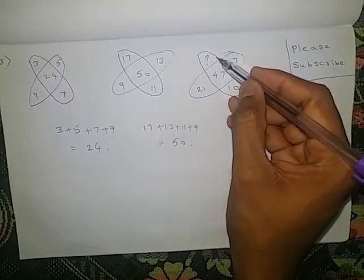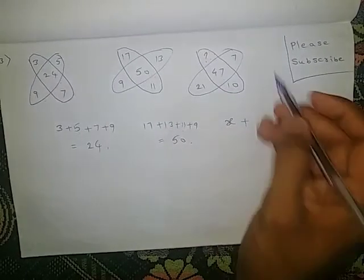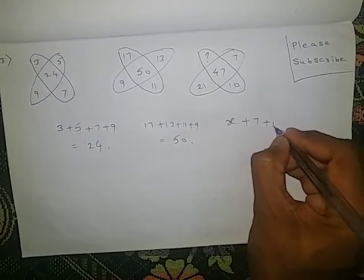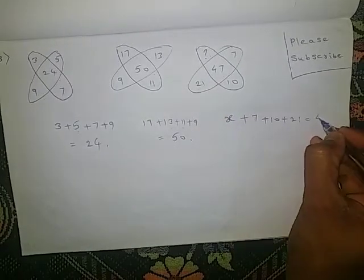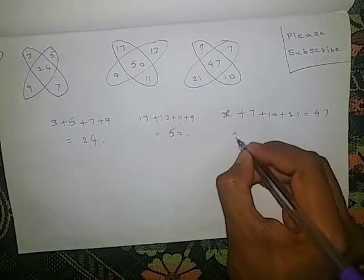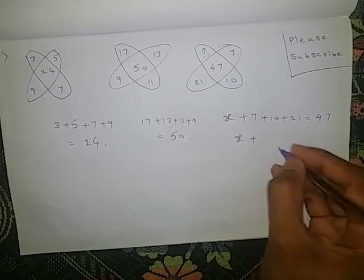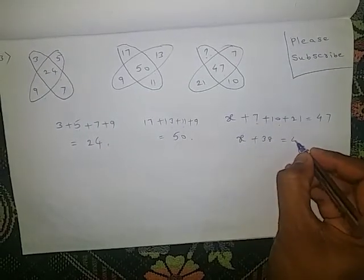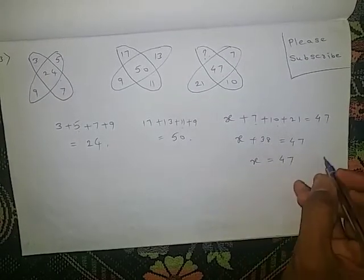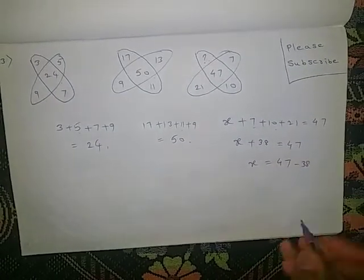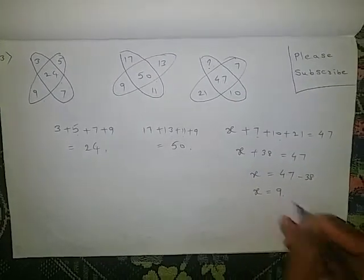Now here also: the unknown number I am taking as some constant X. X plus 7 plus 10 plus 21 equals the middle number 47. X plus 7 plus 10 is 17, plus 21 is 38, equals 47. So X equals 47 minus 38. X value is 9.